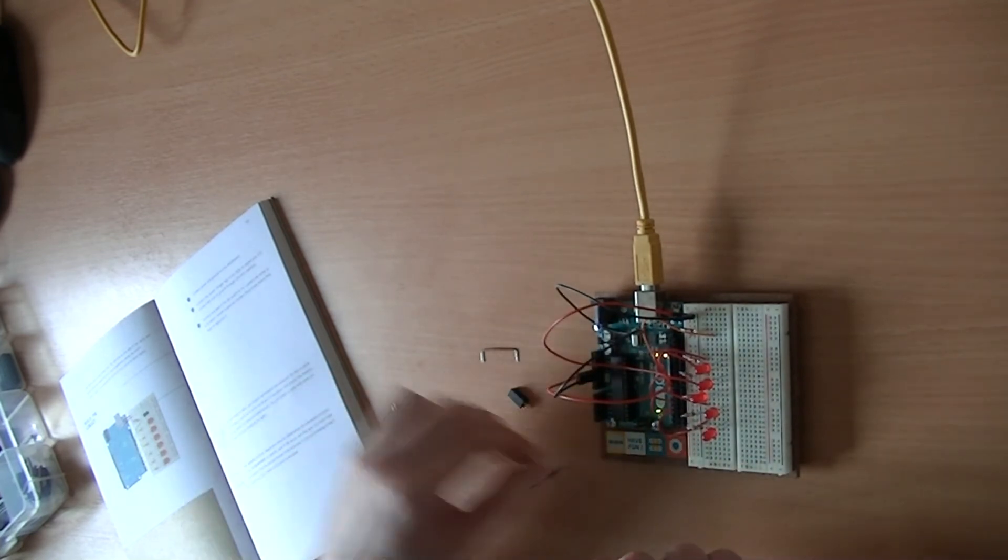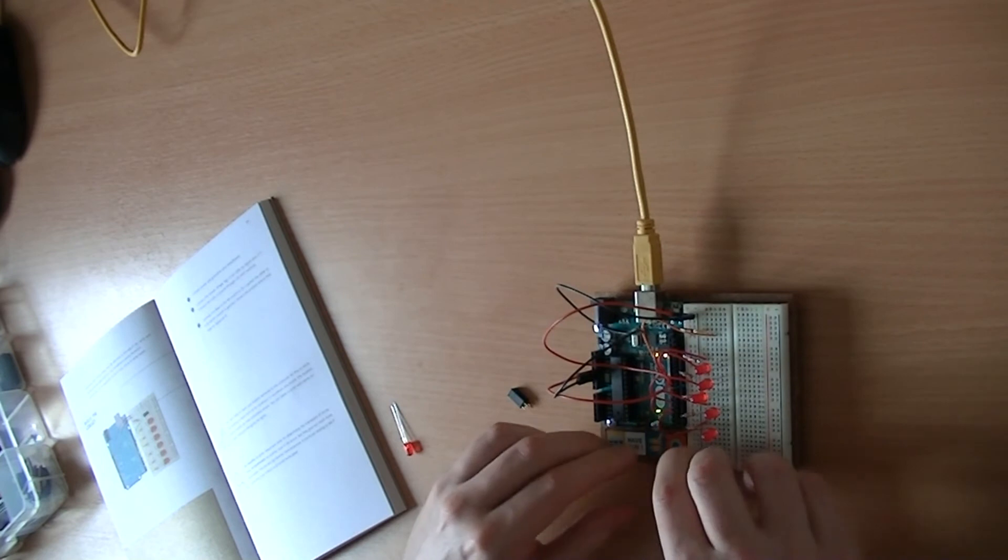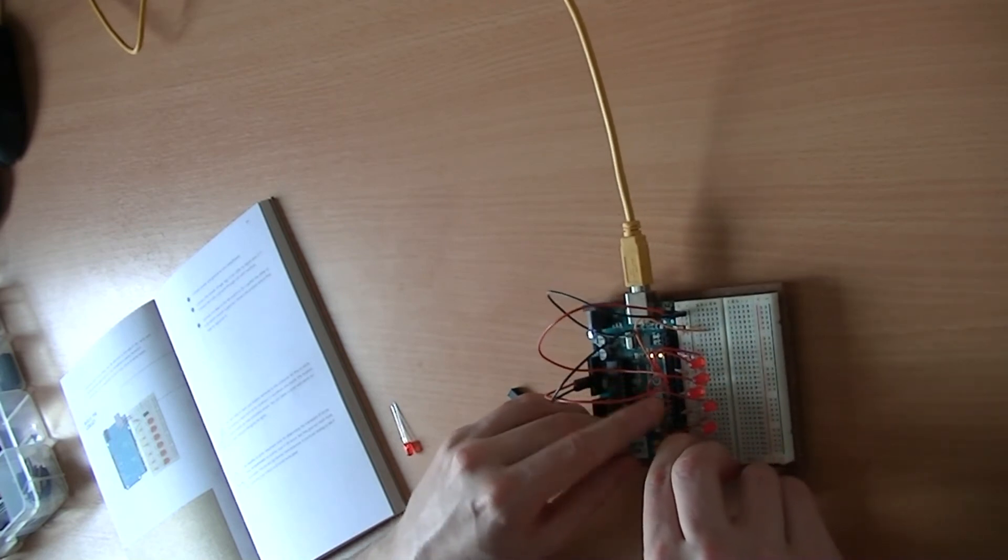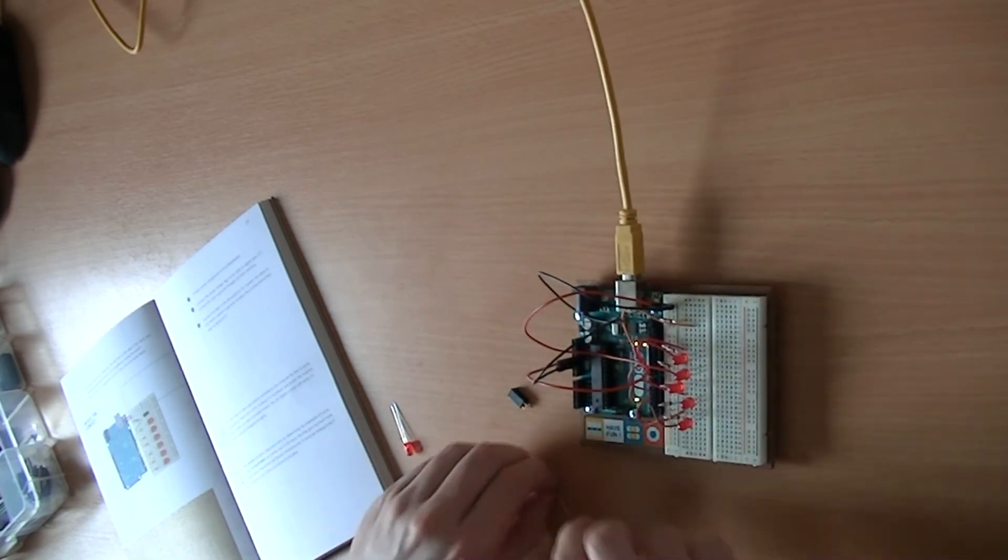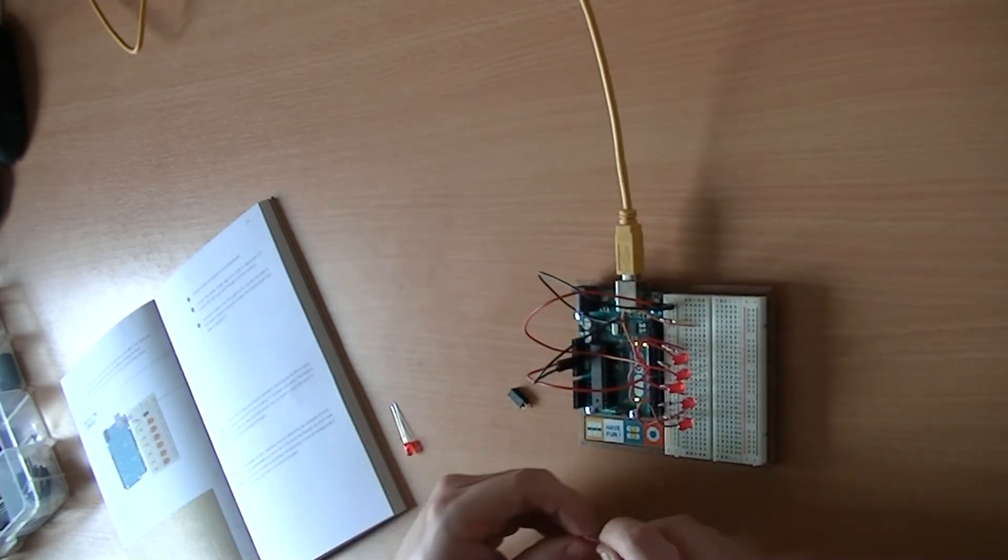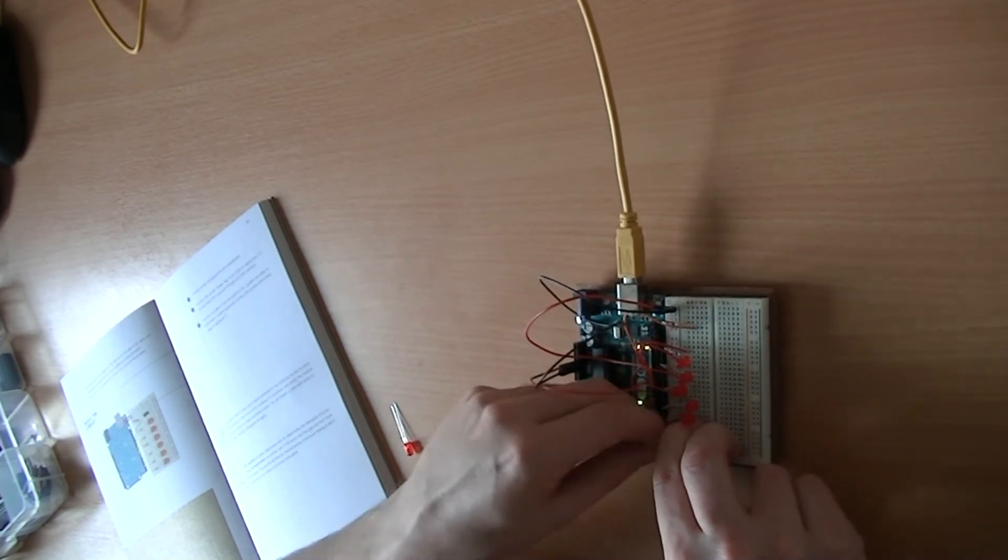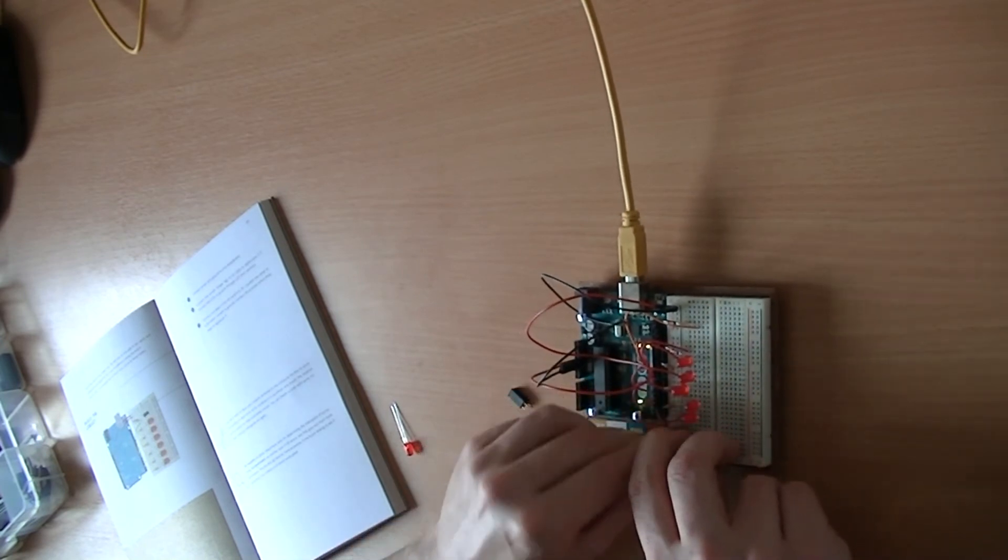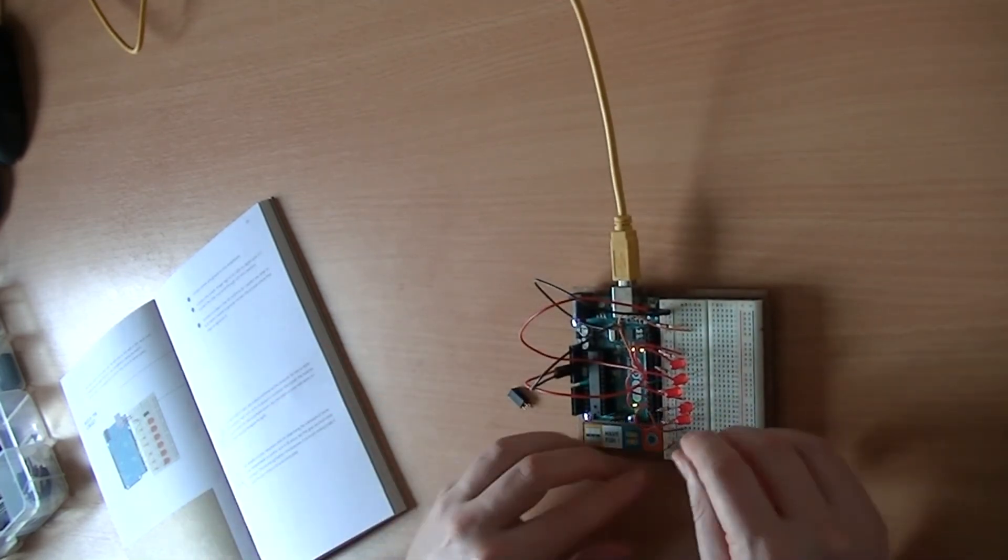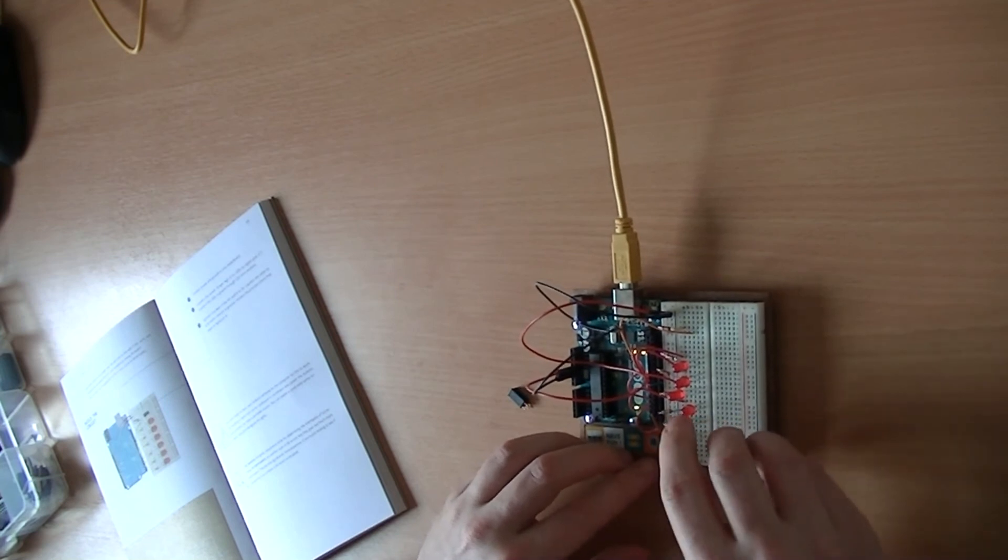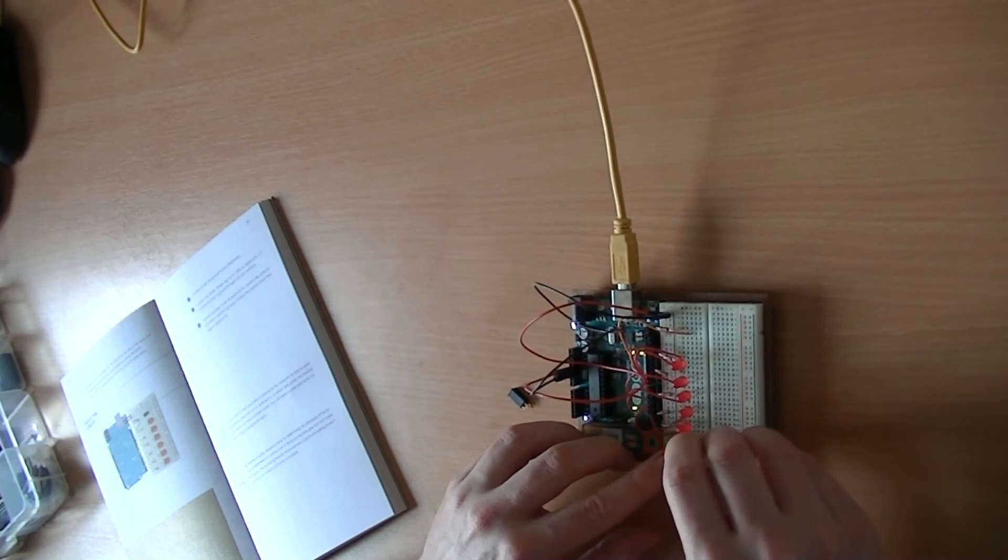And then our final one, which is going from digital port 2 there through to row 25. And our resistor, row 26 back to the ground. And finally the LED. There is rows 25 and 26. Perfect. So all our LEDs are in place.